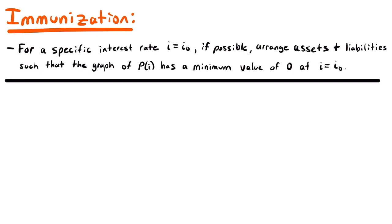The idea of immunization is this: for a specific interest rate i equals i-naught, if possible, we are going to arrange the assets and liabilities such that the graph of the net present value function capital P of i has a minimum value of zero at i equals i-naught, at that specific interest rate.